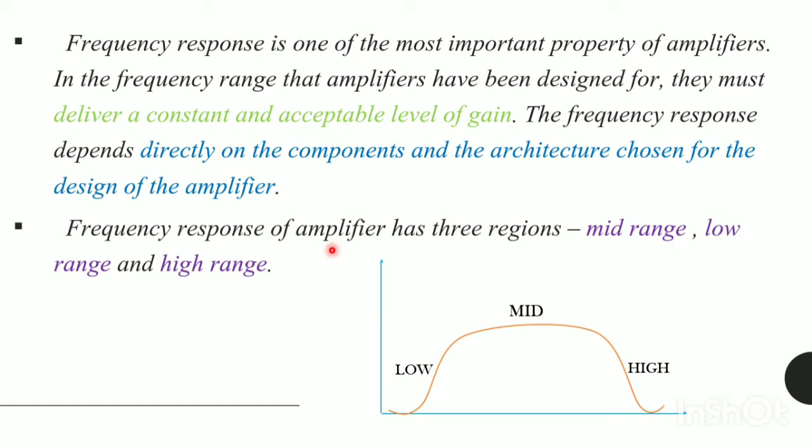The frequency response of an amplifier has three regions, namely mid-range, low-range and high-range. Here is the frequency response of an amplifier. The increasing steep denotes a low frequency range, the constant one is mid-frequency, and the decreasing one is high-range.